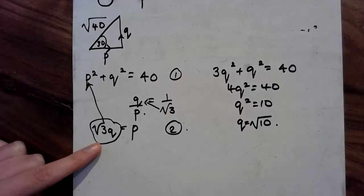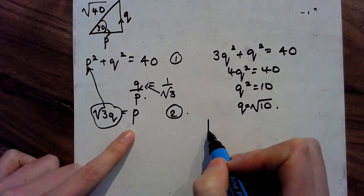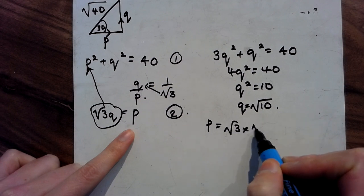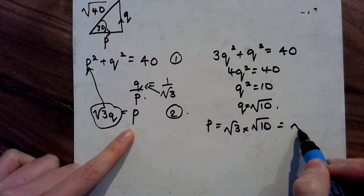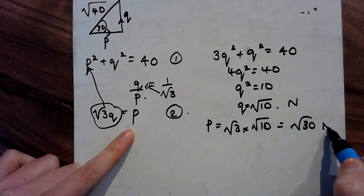And then I need to substitute back in to get what P is. So P is root 3 times Q, so root 3 times root 10 or root 30. And they're both forces, so they're both in Newtons.